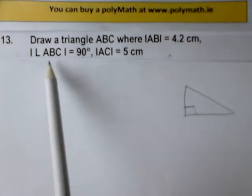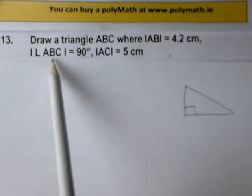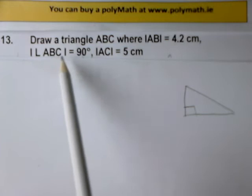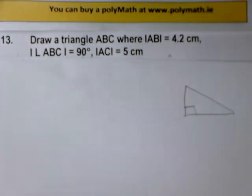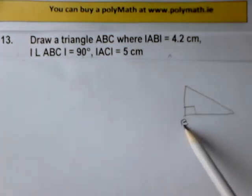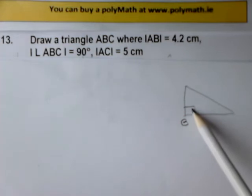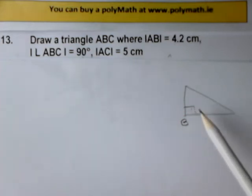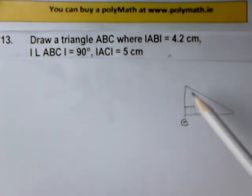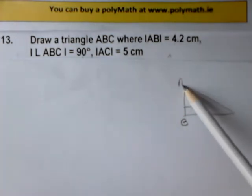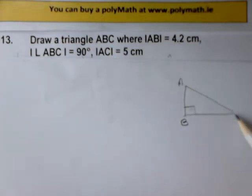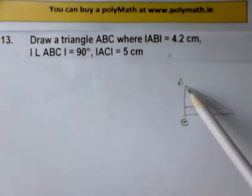It's the angle ABC, and the middle letter is always where the angle is, so that's B and that's 90 degrees there. It doesn't matter whether A is there and C is there or the other way around.